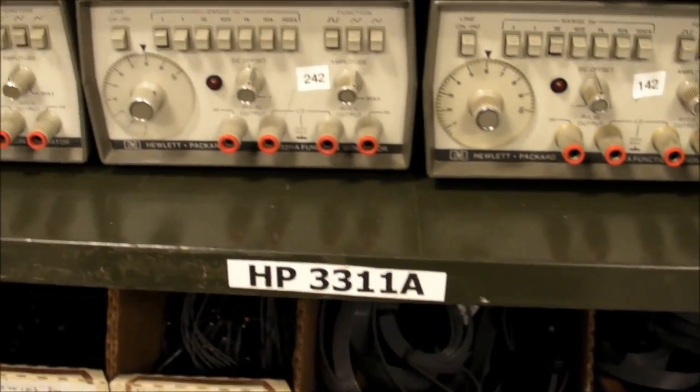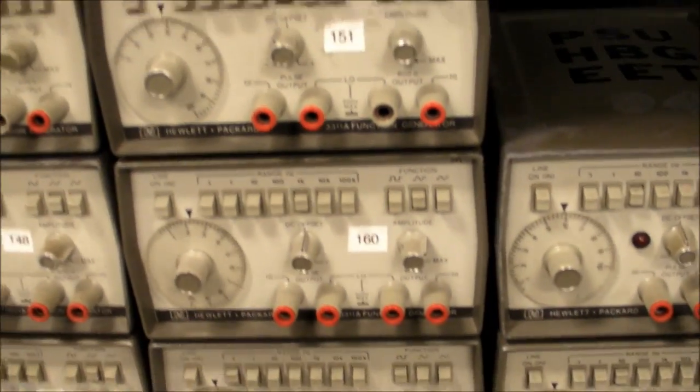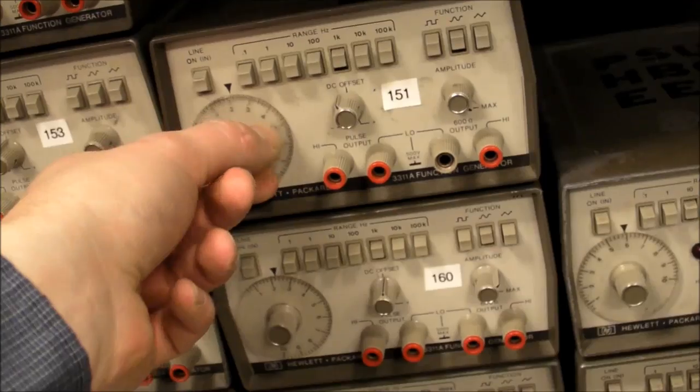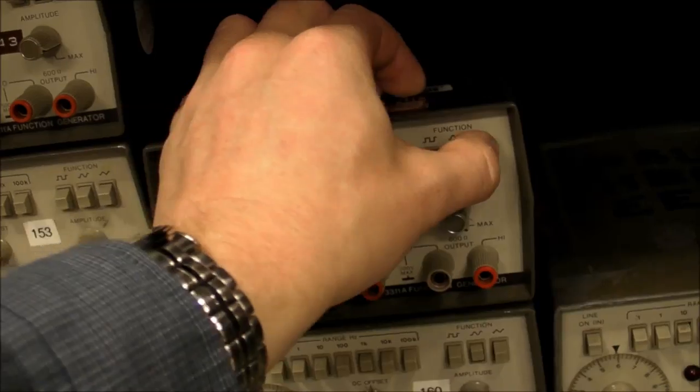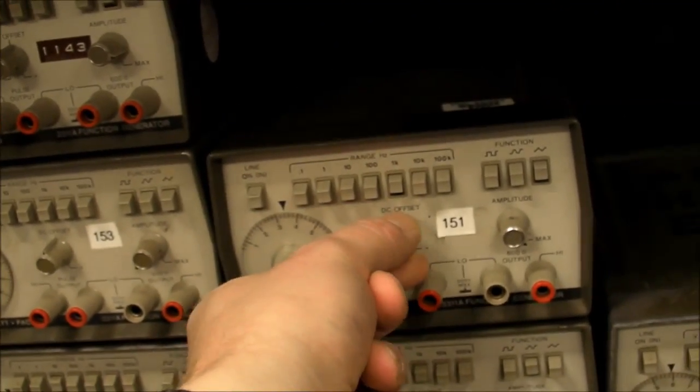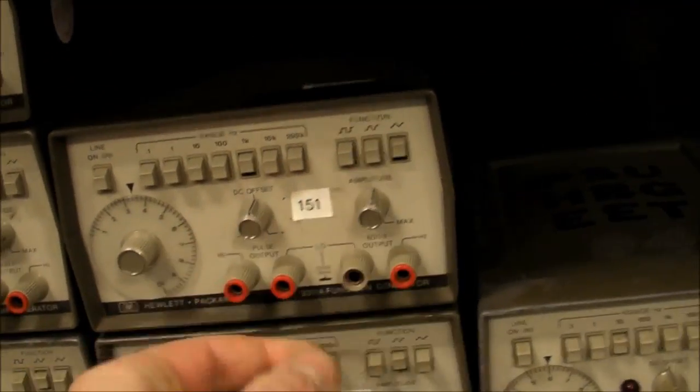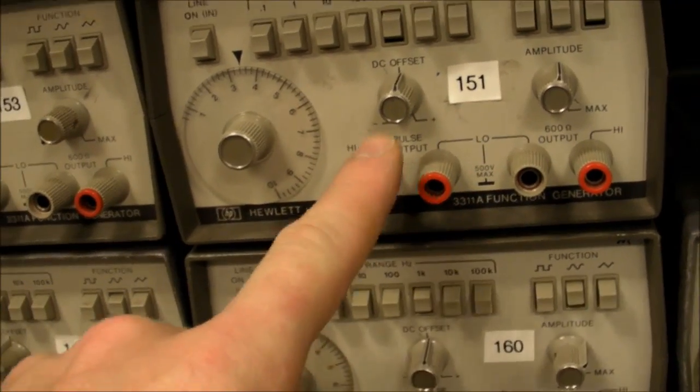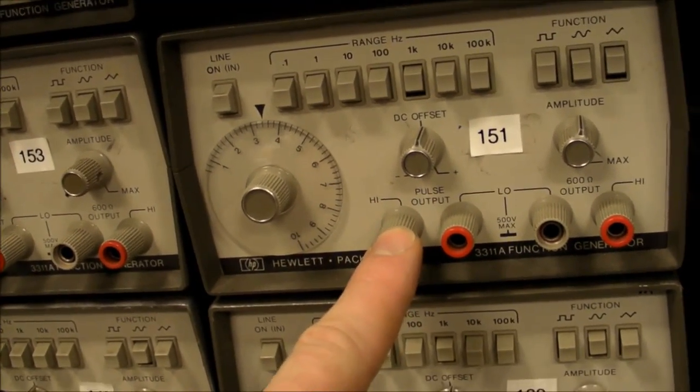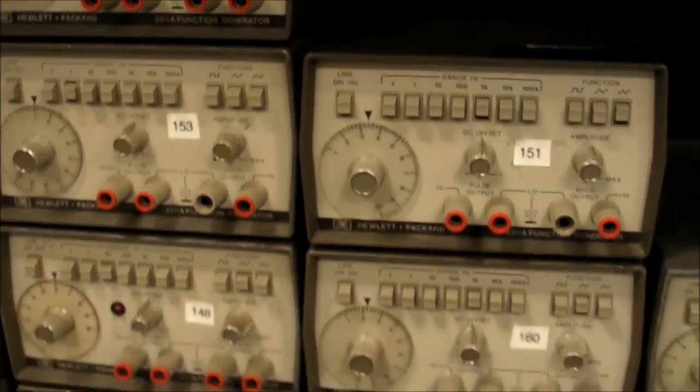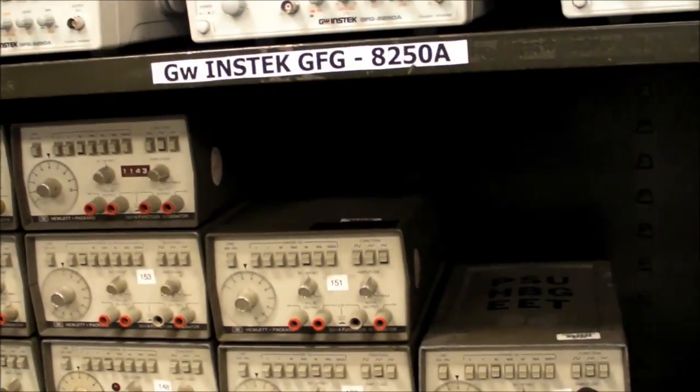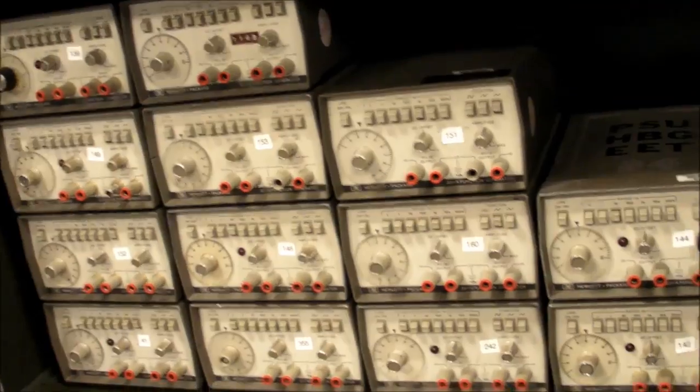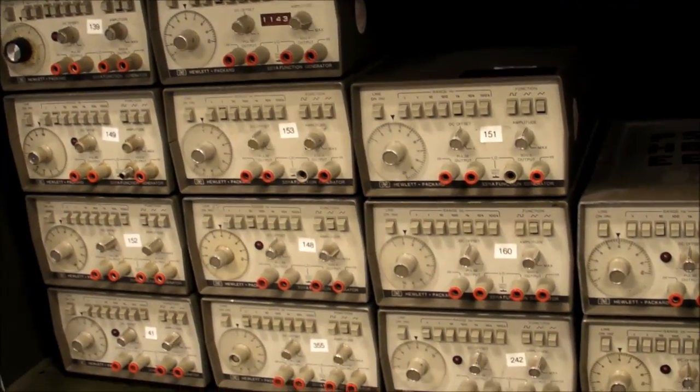Same thing for these old HP 3311As these old analog things with very limited functionality. It just has the frequency, we got three different functions and DC offset and amplitude and then there's a 600 ohm output and a TTL pulse output as well. And these things are most commonly used for the digital logic lab where if all you need is a one kilohertz square wave clock signal then these things will suit the bill just fine.